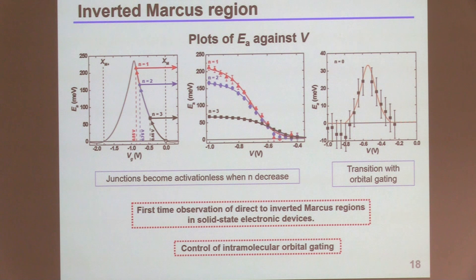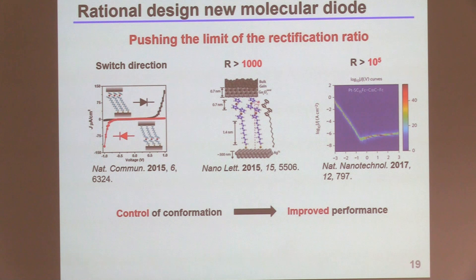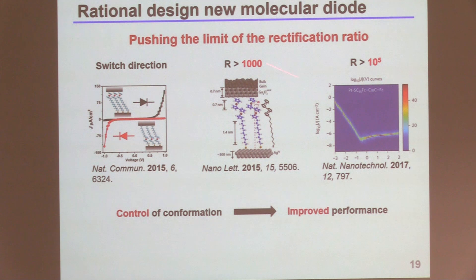Having studied intermolecular and intramolecular interactions, we started a rational design of a new molecular diode to push the limit of the rectification ratio. One thing we also studied was the ferrocene-electrode interaction — by changing the position of the ferrocene we found we could actually switch the direction of rectification. Then by controlling the conformation of our molecular diode based on what we had learned, we first reached rectification of 1,000, and at the end reached 10^5. Then I could graduate and move to Harvard.